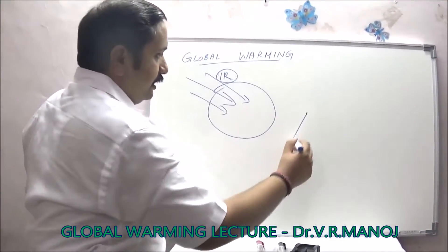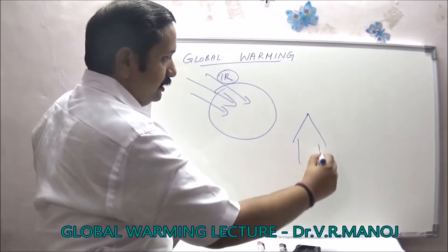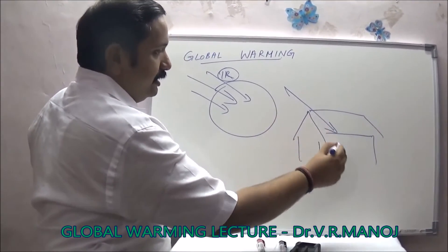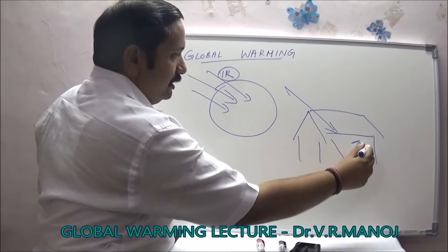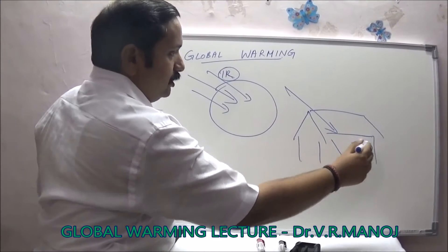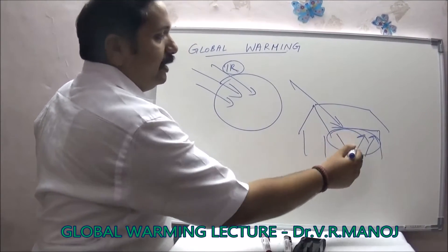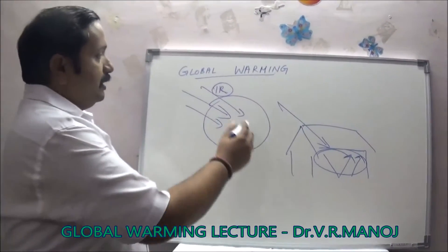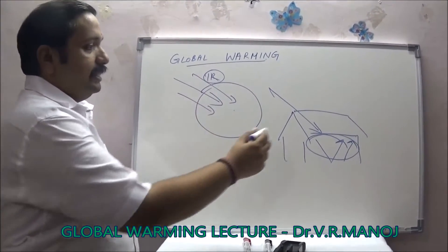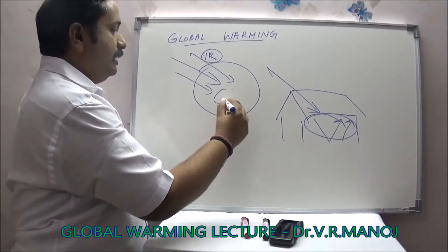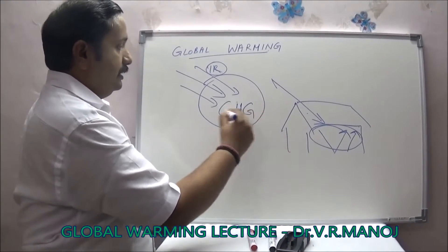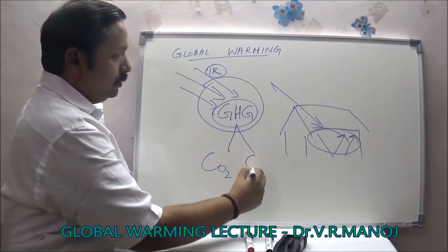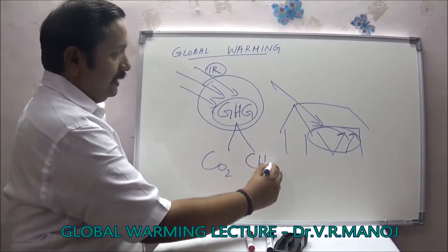Generally in a greenhouse, in a glass house on Earth, what happens is when radiation comes in from sunlight, much of the radiation is trapped within the house and heat is generated. You can use this in cold countries to grow crops. The same principle applies with IR radiation, but instead of glass, you have greenhouse gases. The most important greenhouse gases are CO2 and methane, CH4.